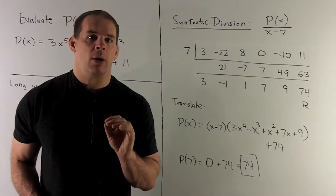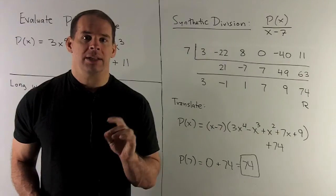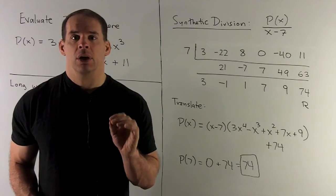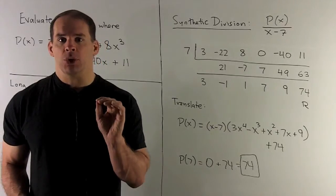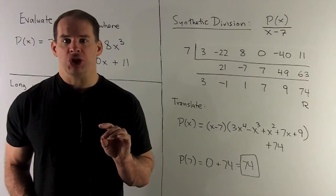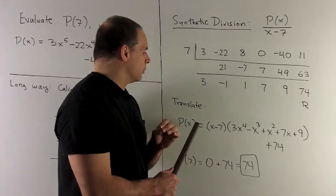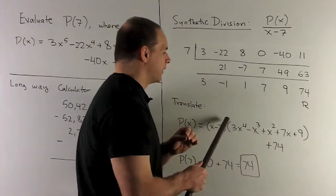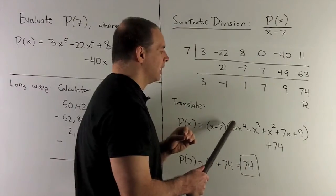A better way to go about evaluating the polynomial, take P of X divide by X minus 7. What will that get us? Well, if we translate what comes out of the division, we'll have P of X equal to X minus 7 times a polynomial, okay, that's what comes out of our division, and then a remainder.